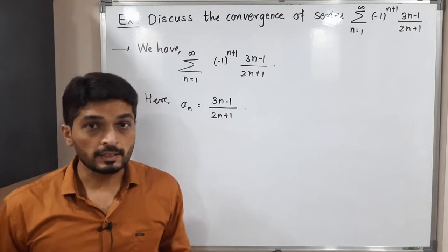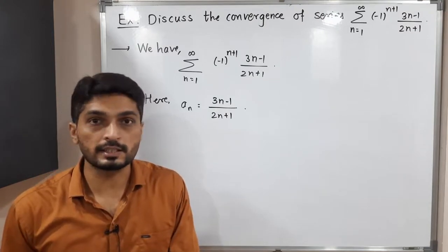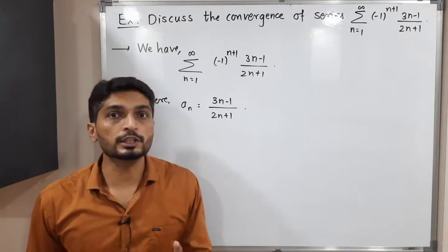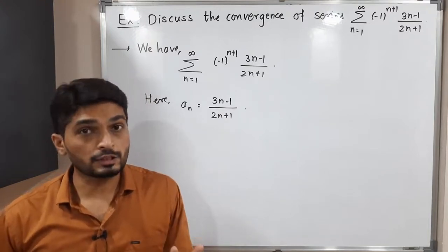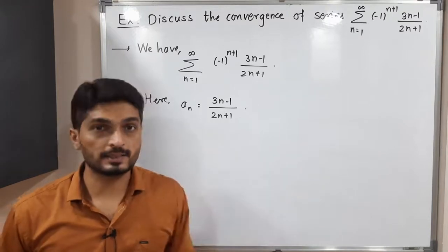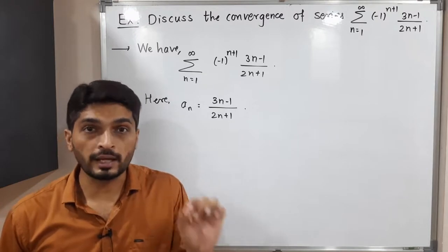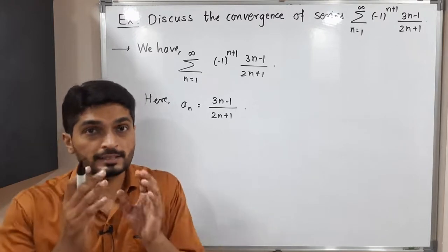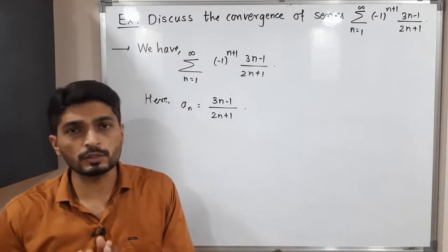So Leibniz theorem says, if this a_n satisfies three conditions, then we say the series is convergent. The first condition is it should be greater than 0. Second condition, it should be a decreasing sequence. And the third condition is, limit of a_n must be 0. That means that sequence a_n must converge to 0. So let us check all these three conditions.